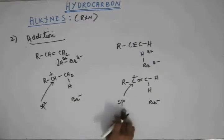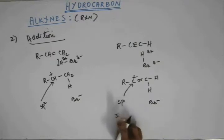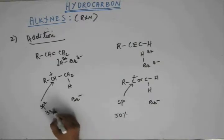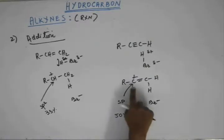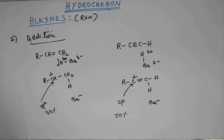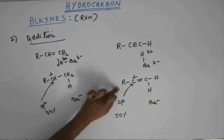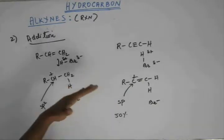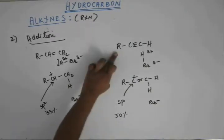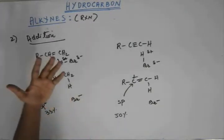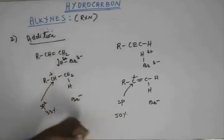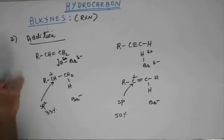The sp-hybridized carbocation carbon has 50% s-character, while the sp2 carbon has 33% s-character. Higher percentage s-character means higher electronegativity. So the sp carbon in the alkyne carbocation is more electronegative, making the plus charge on it less stable. A less stable intermediate means the RDS is not crossed easily, making the reaction slower. Overall, alkyne is less reactive than alkene for addition reactions; comparatively, alkene is more reactive.